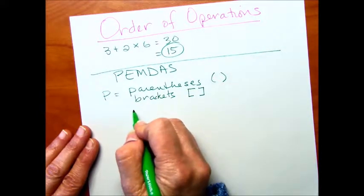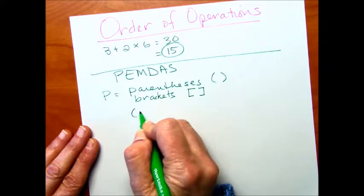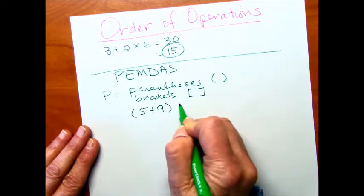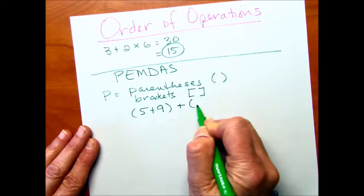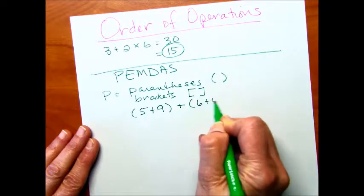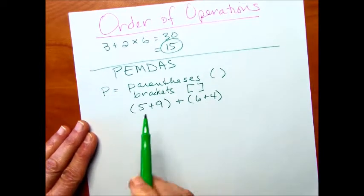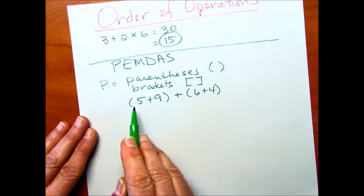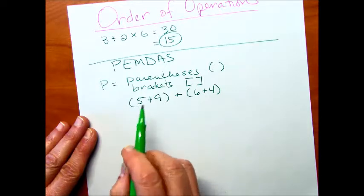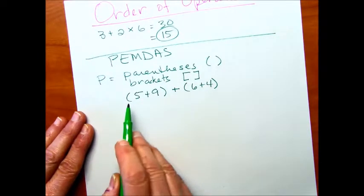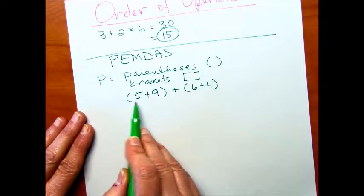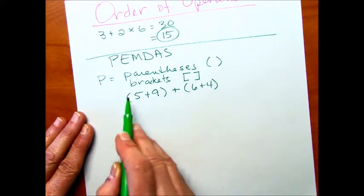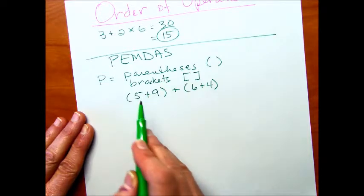So you might have open parentheses 5 plus 9 close parentheses plus open parentheses 6 plus 4 close parentheses. Now these parentheses, what they're doing is they're grouping this operation. And one way to say it is the quantity of 5 plus 9 plus the quantity of 6 plus 4, because what's in here represents a quantity.